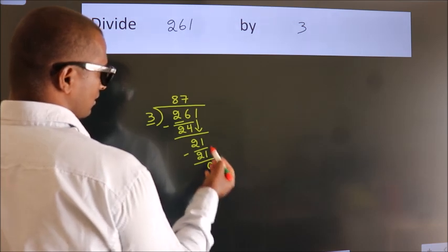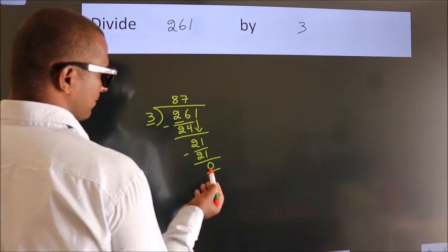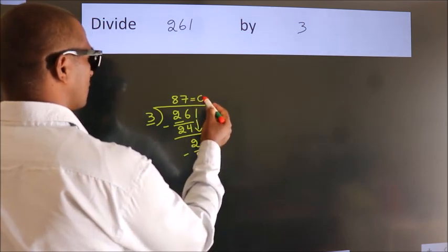After this, no more numbers to bring down. And we got remainder 0. So this is our quotient.